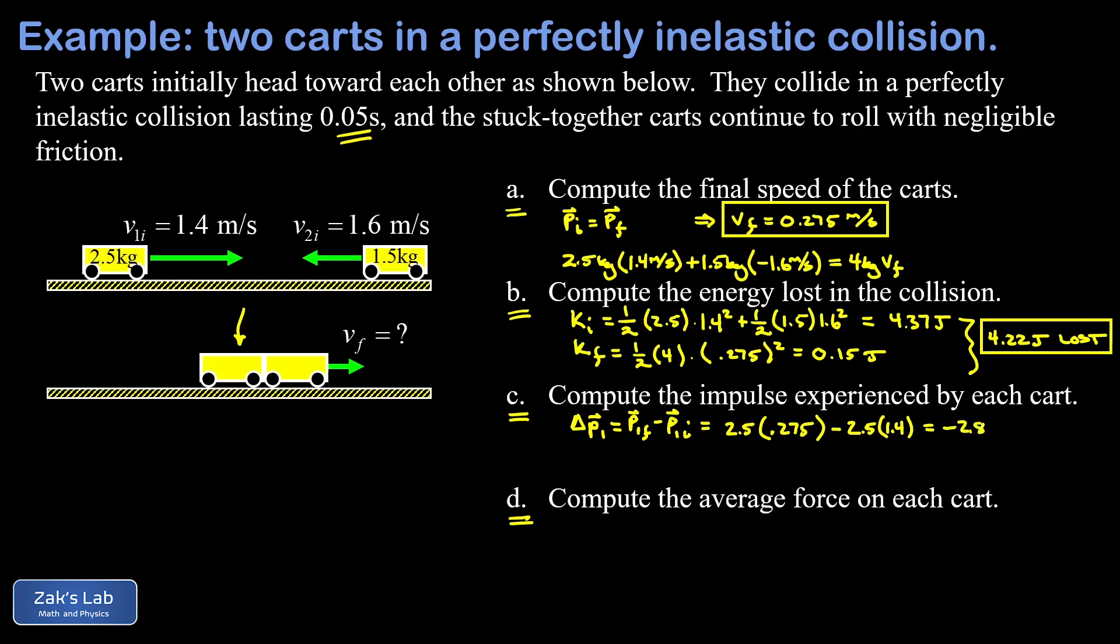Now we do the same thing for cart number two, the 1.5 kilogram cart. Again, the impulse is just the change in momentum, so that's p2 final minus p2 initial. Our final momentum for that cart is given by mass - 1.5 kilograms - times its final velocity which was a positive 0.275. For the initial, we need to be really careful because it initially had a negative momentum. We're subtracting p2 initial, but remember p2 initial carries a minus sign because it has that initial leftward pointing velocity.